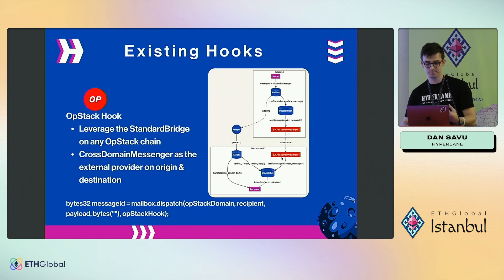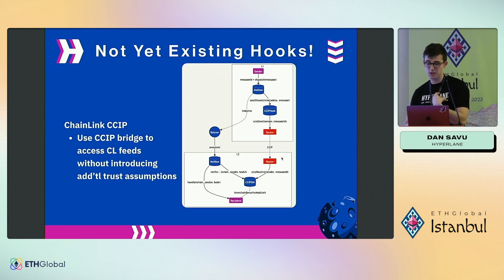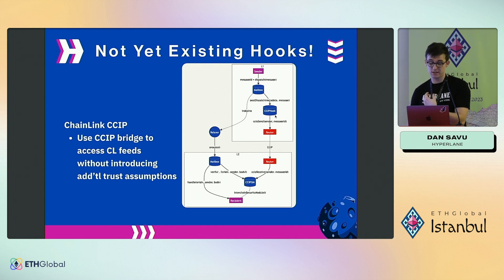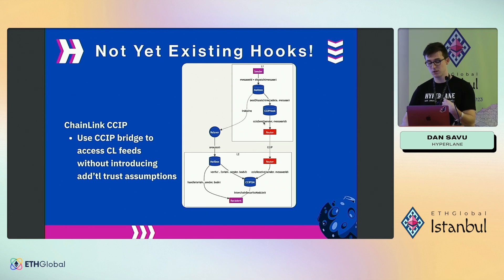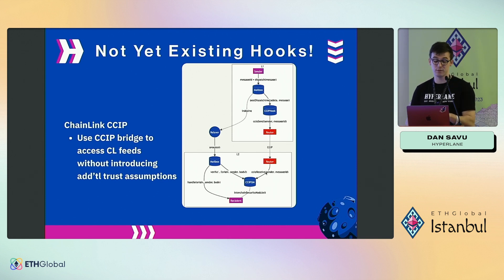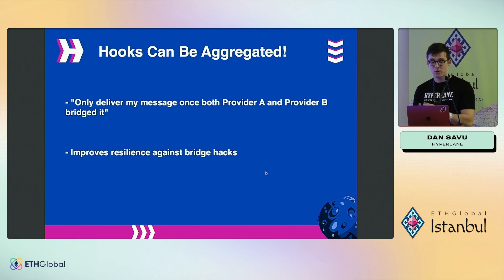Say you wanted to use a new bridge provider not currently supported by Hyperlane — you can do that yourself. It's fairly straightforward. With the Chainlink CCIP example, you just need to abstract over sending a message and receiving a message, and then the entire Hyperlane infrastructure will manage delivery for you.